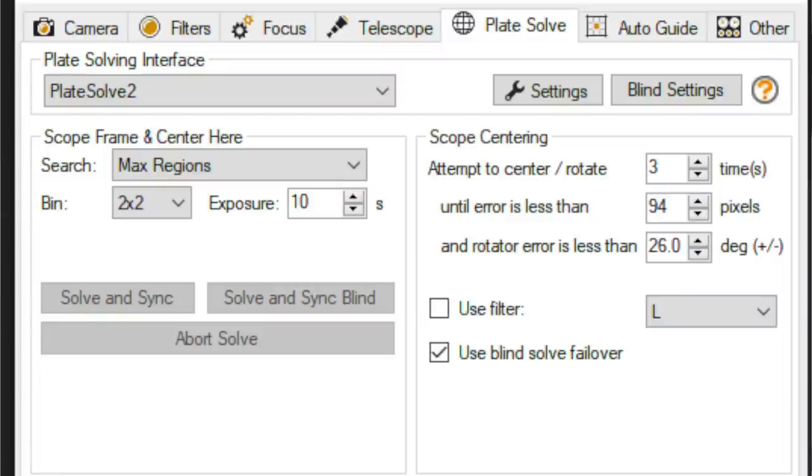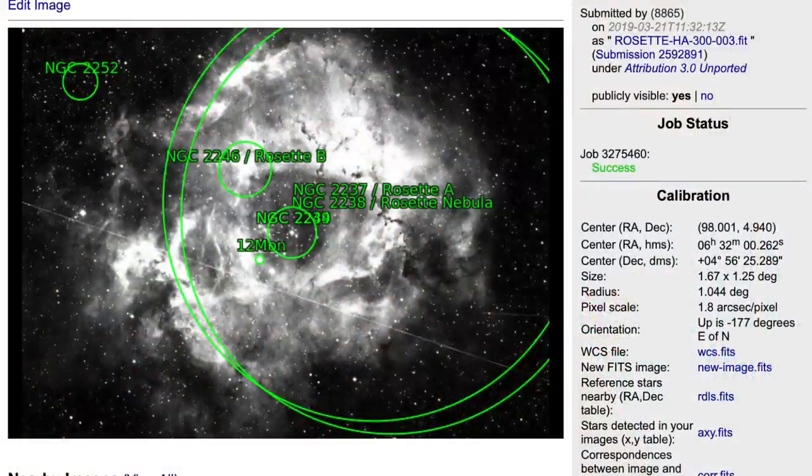Most acquisition software packages for astronomy will have some sort of in-built plate solving. There's also something called Blind Plate Solve, where the plate solving software just makes no assumptions about where you are, what the frame of reference is. And may even pass over to an online service like astrometry.net. It takes a little longer, but it will solve the image and give you the exact celestial coordinates of that image.